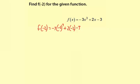Okay, so now we just need to simplify. First thing we're going to do is the exponents. Negative 2 to the third — that's negative 2 times negative 2 times negative 2, or negative 8. So we're going to have negative 3 times negative 8. Just leave the rest of this as is: plus 2 times negative 2, minus 3.